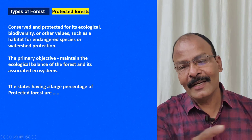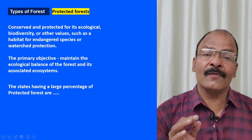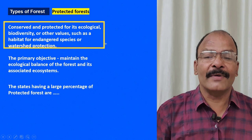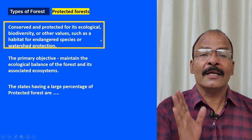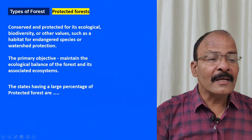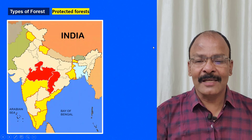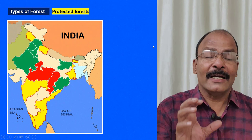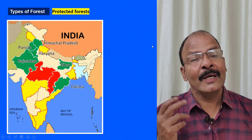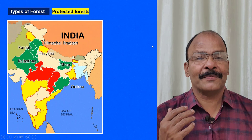Protected forest also has clearly defined boundaries. These forests are conserved and protected for ecological biodiversity — cutting of trees is not allowed. The primary objective is ecological balance of the forest and associated ecosystems. States with large protected forest areas include Madhya Pradesh, Chhattisgarh, Himachal Pradesh, Punjab, Rajasthan, Haryana, Bihar, and Odisha.